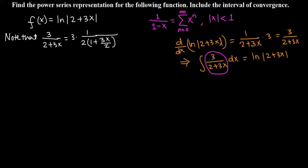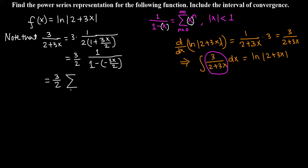Distributing 2 inside gives back 2 plus 3x. We can rewrite 1 over (1 plus 3x over 2) as 1 over (1 minus negative 3x over 2), which is now in the form 1 over 1 minus something. So 3 over (2 plus 3x) equals 3 over 2 times the sum from n equals 0 to infinity of (negative 3x over 2) raised to the n. This power series is valid when the absolute value of negative 3x over 2 is less than 1.